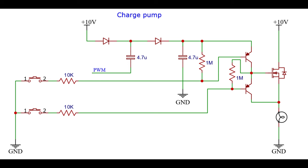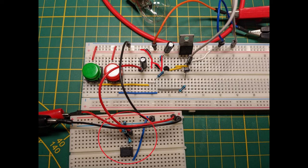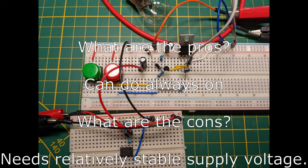Number 9: Charge pump. This is the charge pump circuit. It works a lot like the bootstrap circuit. It has a classic charge pump that charges a capacitor 8 volts above the MOSFET's supply voltage. When the first signal is pulled low, a PNP transistor conducts and allows the capacitor to charge the gate to an absolute voltage of supply plus 8, turning it on. The second signal, when pulled low, controls the gate transistor. When this PNP transistor conducts, it discharges the gate to the source of the MOSFET. Pros: can do always on. Cons: needs a relatively stable power supply.